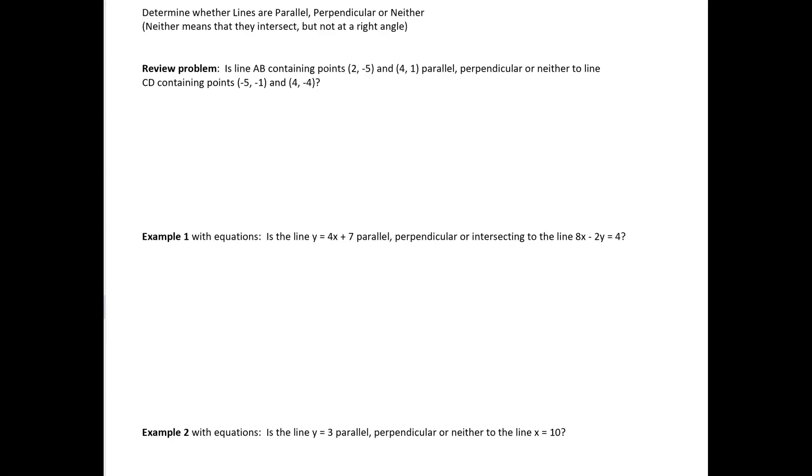First, a review of one way we've already looked at this. One way to look at this is if you're given points. So in this case, two points are on line AB: 2, negative 5, and 4, 1. We want to know if the line formed by those two points is parallel, perpendicular, or neither to the line formed by these two points. We really just need to look at the slope and recall that if the slopes are the same, so if M1 equals M2, then that means the lines are parallel.